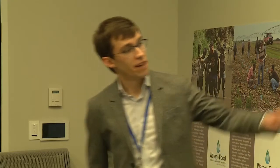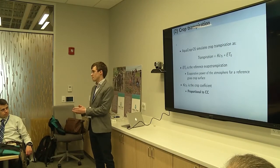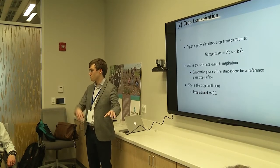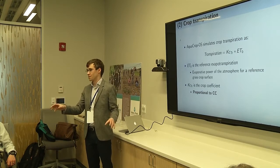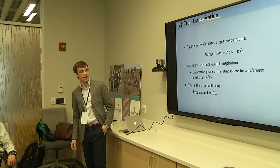The transpiration rate in AquaCrop depends on two things: the reference ET value for that day (ET₀), and the crop coefficient (Kc). Reference ET is basically the evaporating power of the atmosphere, which depends on climatic factors like temperature and wind speed, and is standardized for a reference grass crop surface. The Kc term represents the differences between our crop on the current day and the reference grass crop surface in terms of their transpiring capacities.